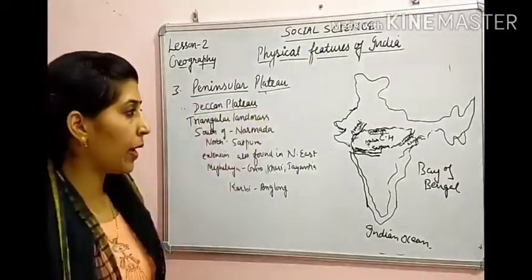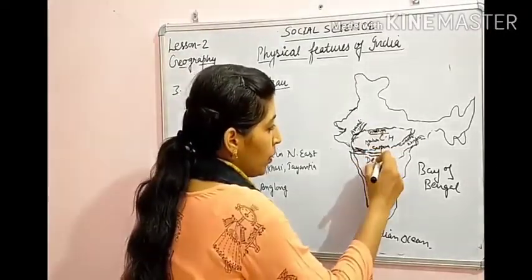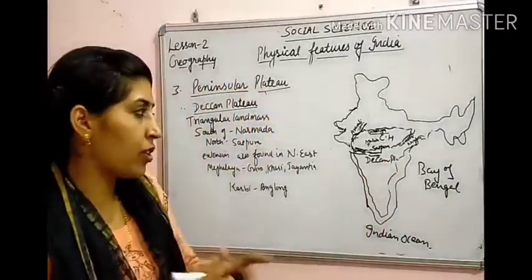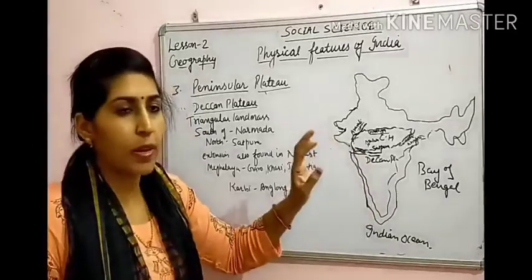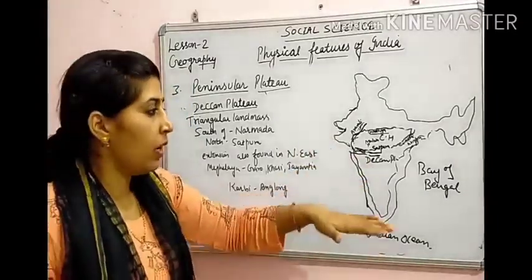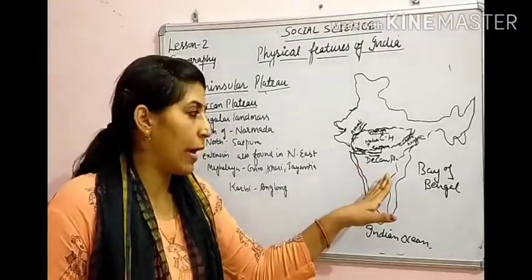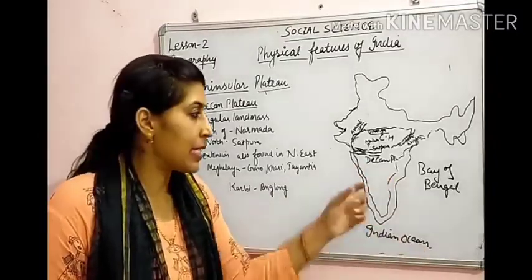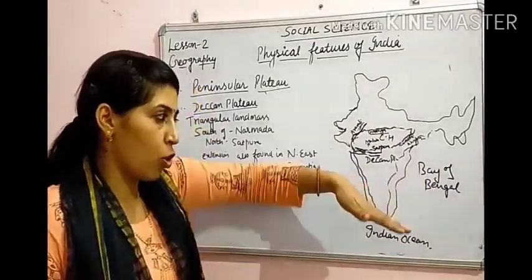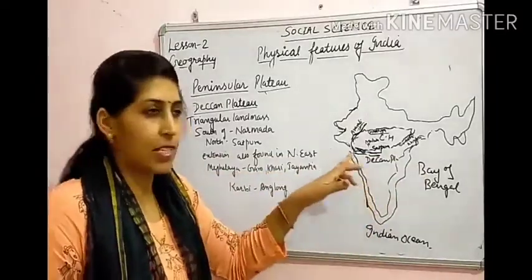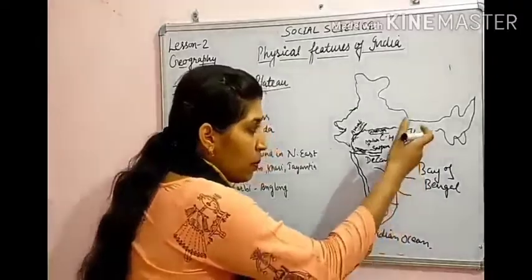Deccan Plateau के north में Satpura ranges हैं और नर्मदा river के south में है Deccan Plateau। यह थोड़ा east की तरफ tilt है — western part ऊपर उठा हुआ है और eastern part थोड़ा नीचे है। इसीलिए बहुत सारी rivers — Mahanadi, Godavari, Krishna, Kaveri — Bay of Bengal में merge होती हैं, क्योंकि इसका slope east की तरफ है।